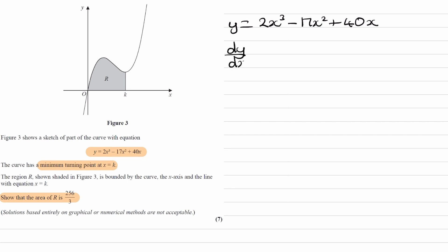So differentiate this, we end up with 6x squared minus 34x plus 40. Set this equal to 0, put this into our calculator, we end up with two solutions: x equals 5 over 3 and 4.